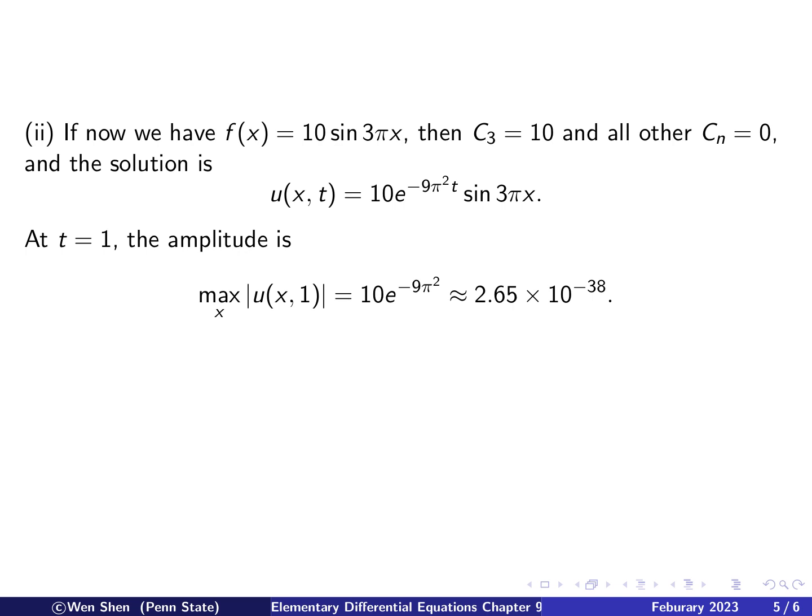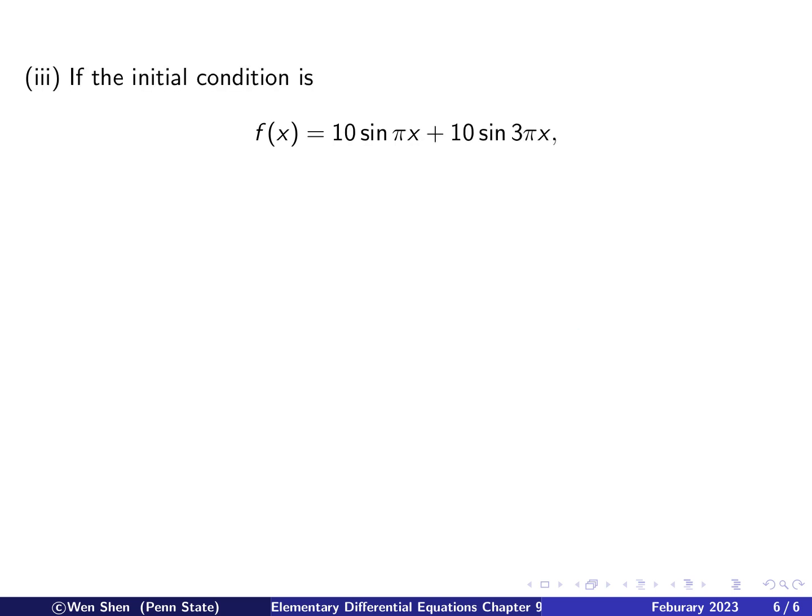So again, let us compute the amplitude of this oscillation at t equals 1, that is this quantity here when t is 1. So this is 10 times e to the negative 9 pi square, and if you calculate it, you see that's about 2.65 times 10 to the negative 38. So 10 to the negative 38, this is a very, very small number. So recall with the first initial condition where we have n equals 1, the magnitude was 10 to the negative 4, so this is much smaller.